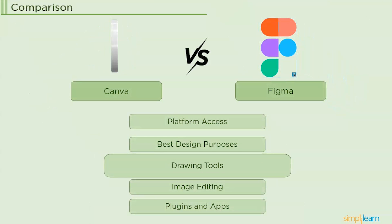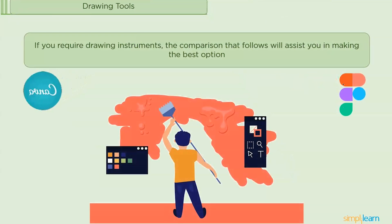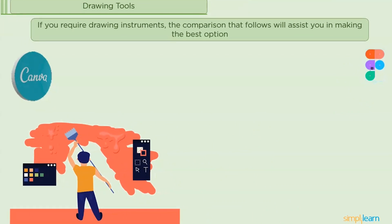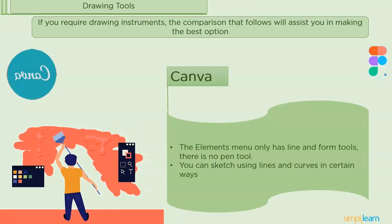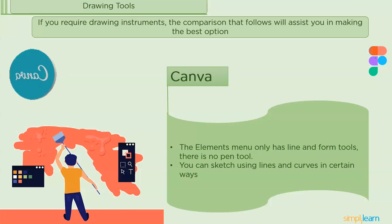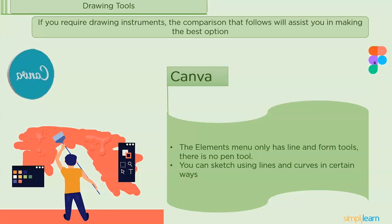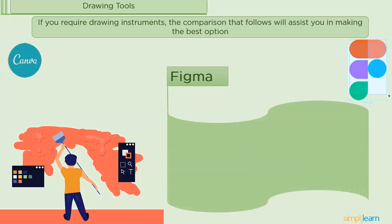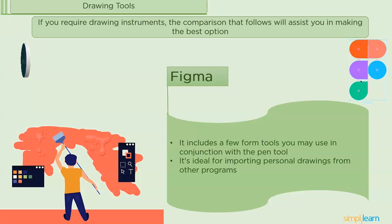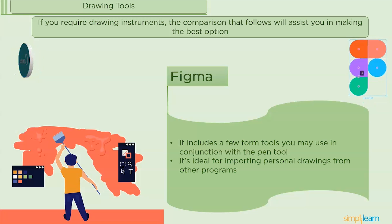The next category is drawing tools. For Canva, its design capabilities are limited in comparison to other design software. There is no pen tool available in the elements menu, only line and form tools, making it easier to use lines and curves in sketches rather than starting from blank. For Figma, drawings can be edited right in the app using Figma's pen and pencil tools. A few form tools are also included in addition to the pen tools. However, it is best to import individual drawings from other applications for UI and UX design.